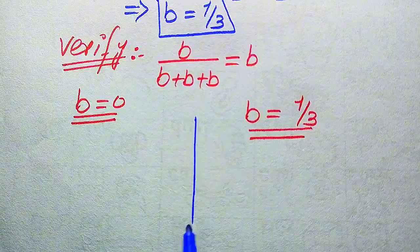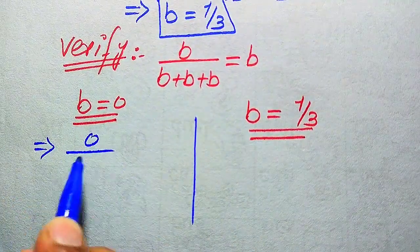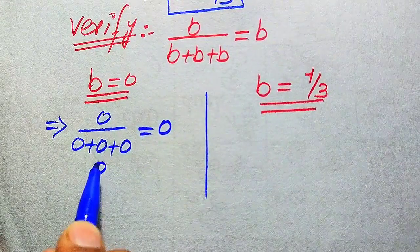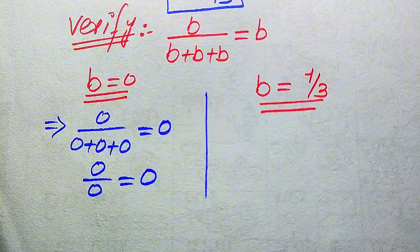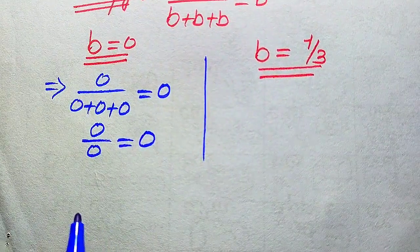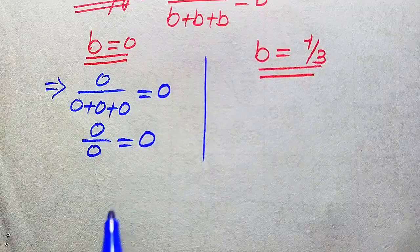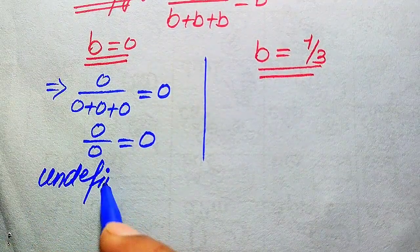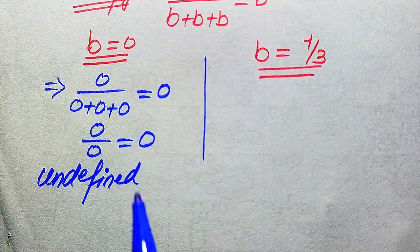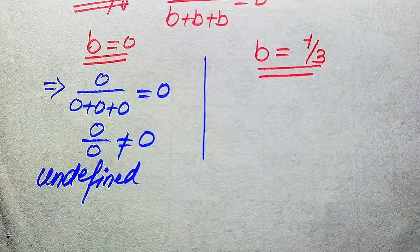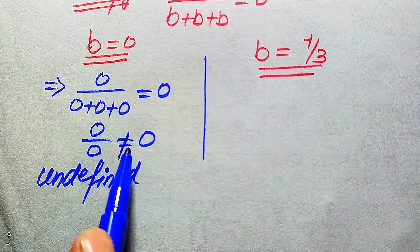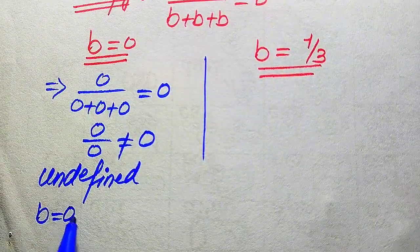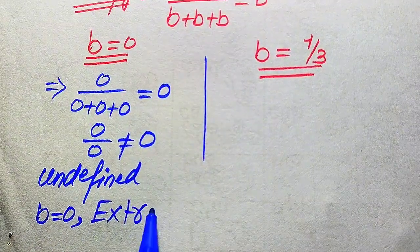When we substitute b equals zero on both sides, it becomes zero divided by zero plus zero plus zero equals zero, which is zero divided by zero equals zero. On the left hand side we have the zero-by-zero form, which is called the indeterminate form, or in other words the undefined form. Since the left hand side is undefined, both sides are not equal, which means b equals zero does not satisfy the given equation.